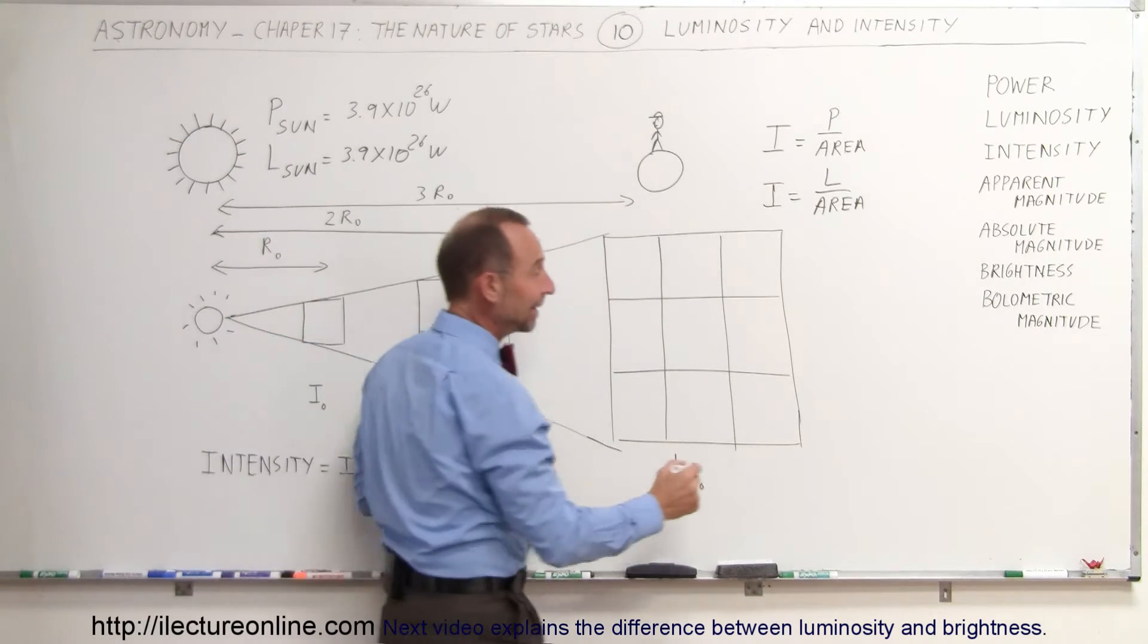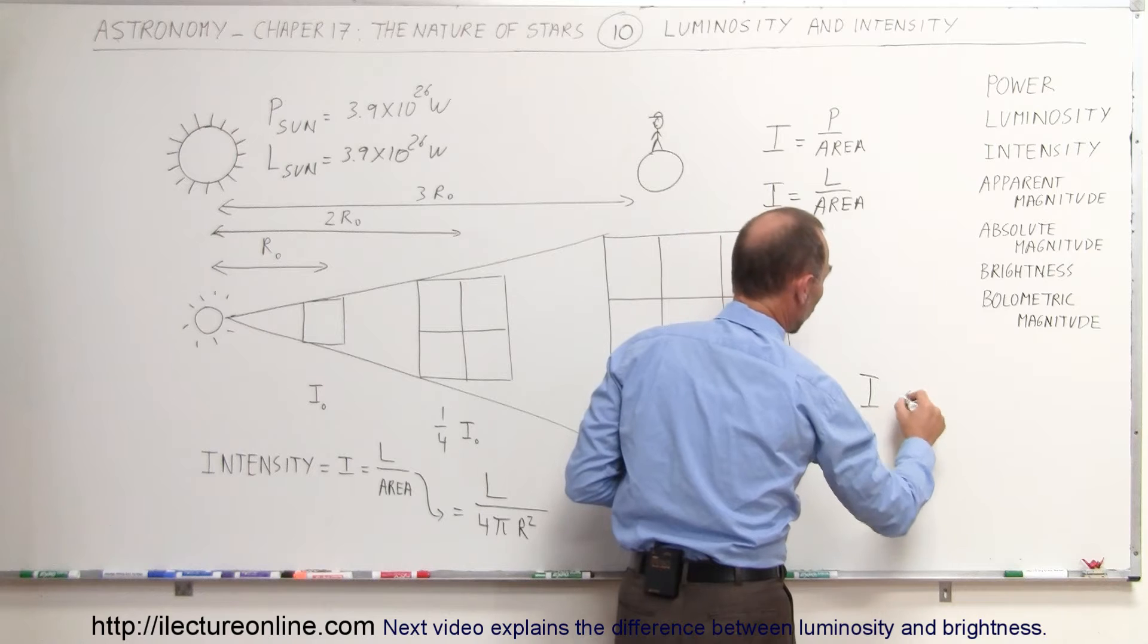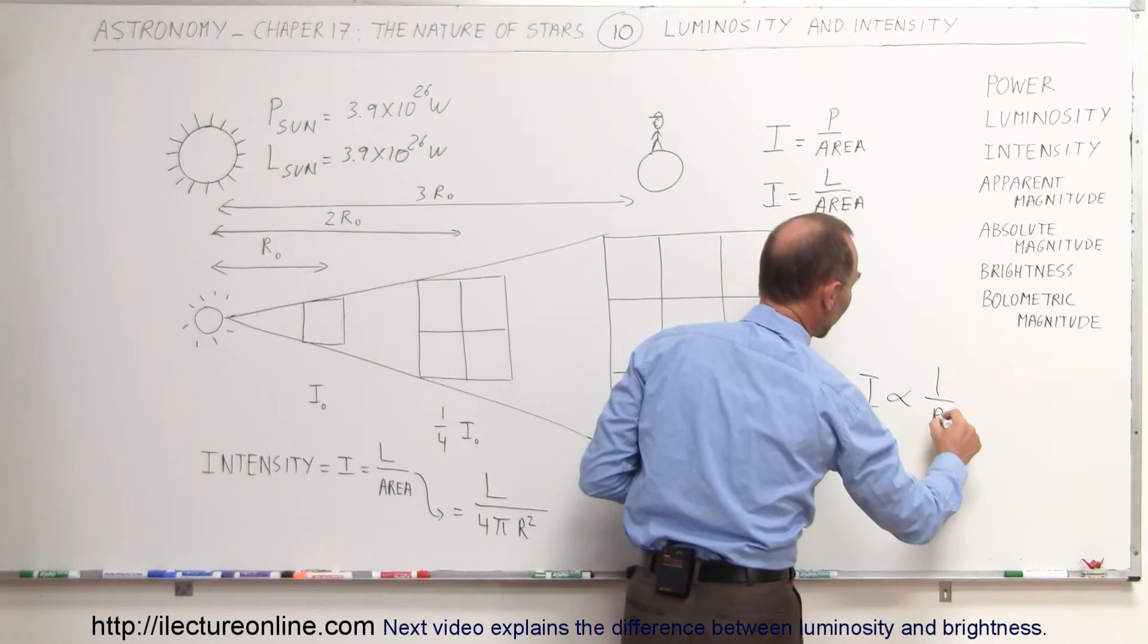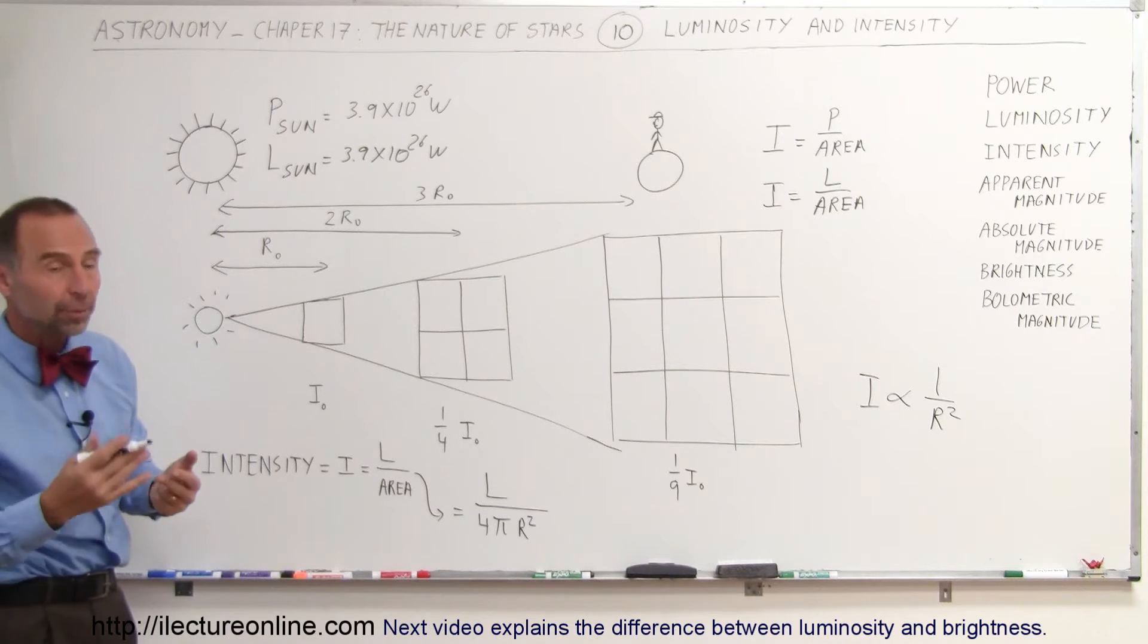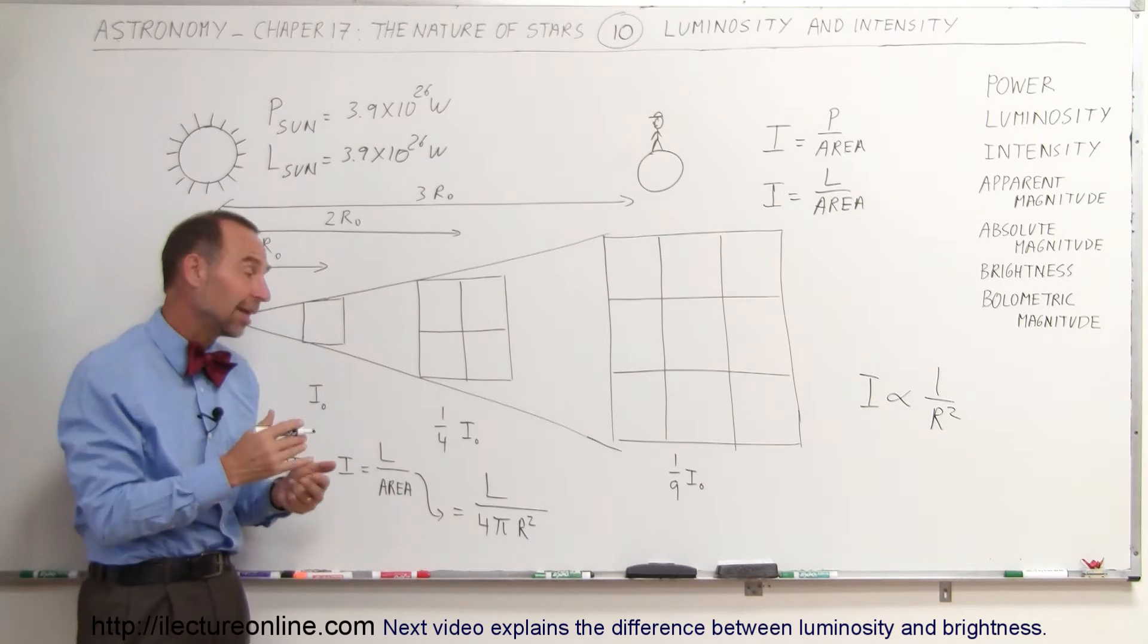It turns out that the intensity is proportional to one over the distance squared. So, if you double the distance, you only get a quarter of the intensity. If you triple the distance, you only get one-ninth of the intensity.